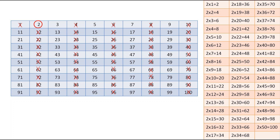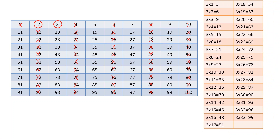The next number is 3. We encircle 3 and check the numbers in the table of 3 up to 100. 6 is already scratched. Next is 9 — let's scratch it. 12 is already scratched. 15 — scratch it. 18 already scratched. 21 — scratch it. 24 already scratched. 27 — scratch it. 30 already scratched. 33 — scratch it. 36 already scratched. 39 — scratch it. 42 already scratched. 45 — scratch it. 48 already scratched. 51 — scratch it. 54 already scratched.